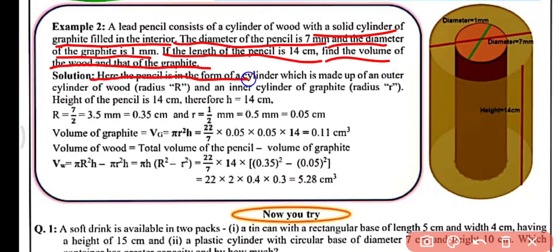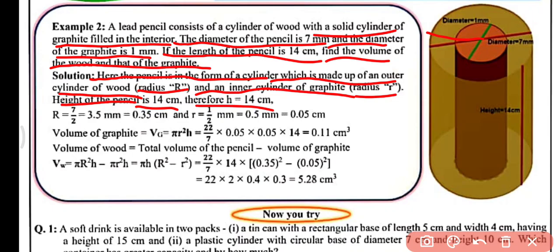The pencil is in the form of a cylinder made up of an outer cylinder of wood with radius R, and an interior cylinder of graphite with radius r. The height (length) of the pencil is h = 14 cm. The outer radius R = 7/2 mm = 3.5 mm = 0.35 cm, and the inner radius r = 1/2 mm = 0.5 mm = 0.05 cm.